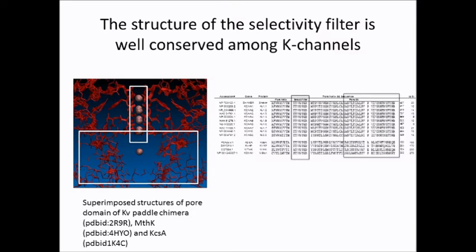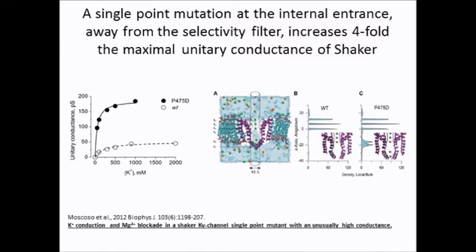Our hypothesis is that differences in the structure of the inner cavity account for this diversity in single-channel conductance. The figure shows the comparison of the structure of three potassium channels, where the selectivity filter is almost invariant, while the inner section of the pore is widely different.